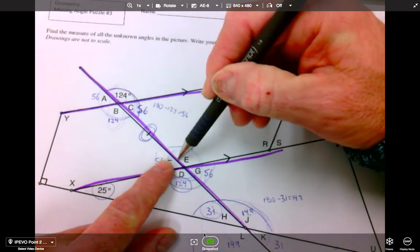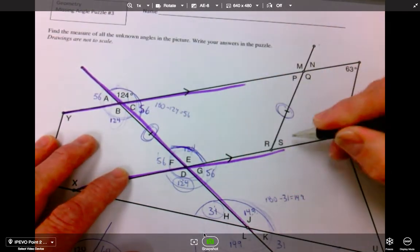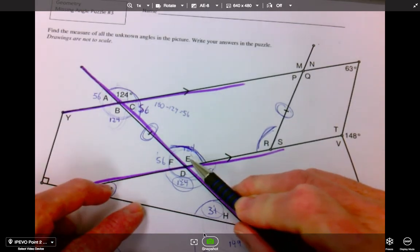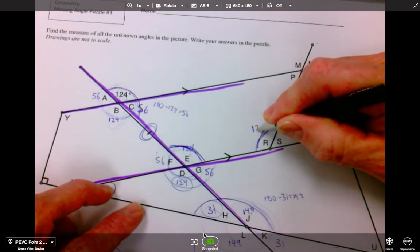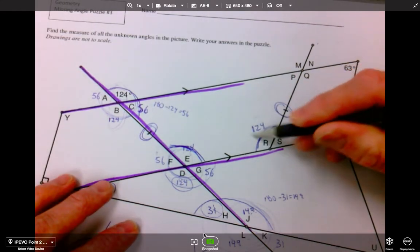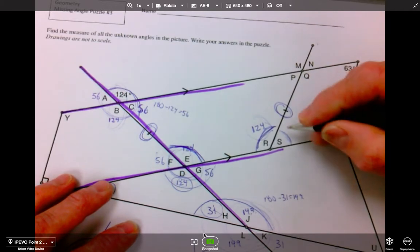If this length is the same as this length, that means this angle is the same as this angle. And if that's the case, if this is 124, then this is 124. If this is 124, then I know through default using the supplementary rule that this is 56.